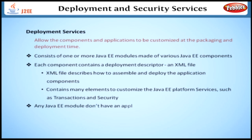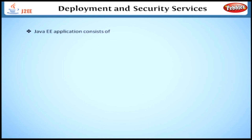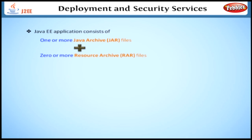If any of the Java EE modules don't have an application deployment descriptor, then it can be deployed as a standalone Java EE module. Generally, a Java EE application consists of one or more Java Archive or JAR files along with zero or more Resource Archive or RAR files which are packaged into an Enterprise Archive, EAR file, with a .EAR extension.